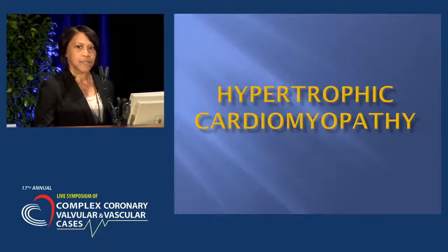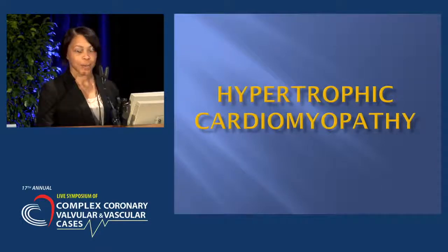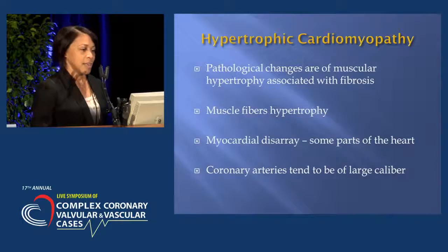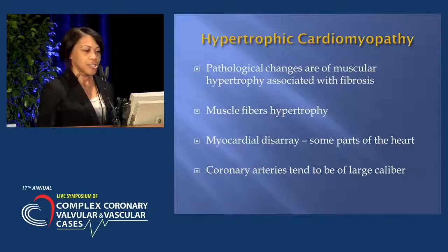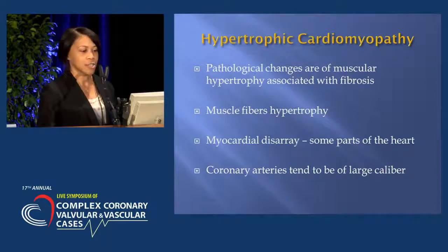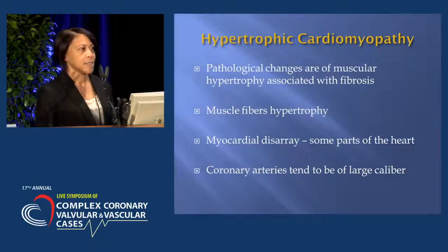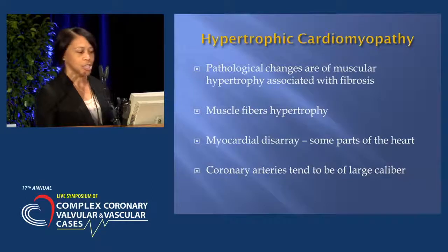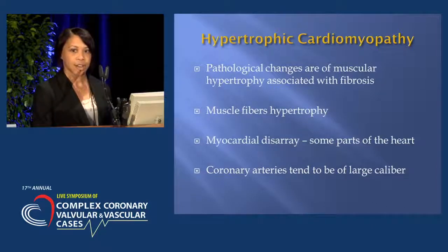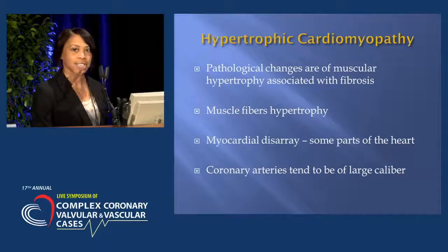For the purpose of this talk, we'll be discussing hypertrophic cardiomyopathy. The pathological changes include muscular hypertrophy associated with fibrosis; the muscle fibers hypertrophy or enlarge, and there's myocardial disarray in some parts of the heart. The coronary arteries tend to be of larger caliber as well.